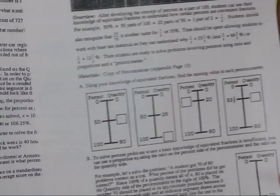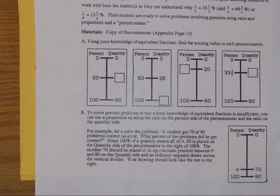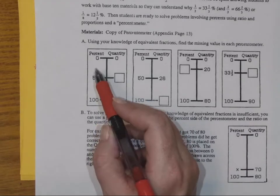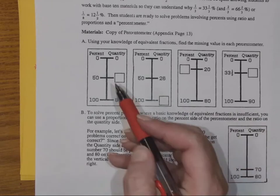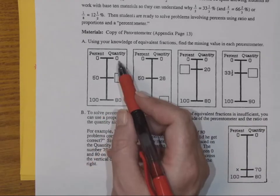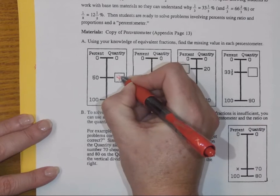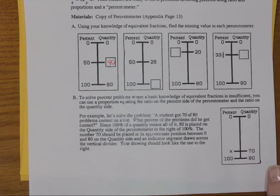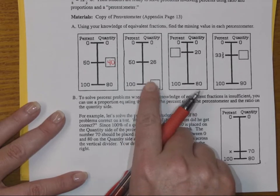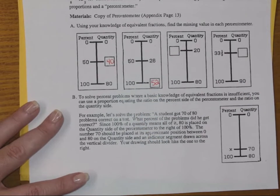Looking at some examples of percentometers on the worksheet. Notice we have the information filled in and a box for what we don't know. I have zero, fifty, one hundred percent on the left, and zero and eighty on the right. So what would the fifty percent be? For this next one, we don't know the full quantity, but we know that fifty percent of that quantity is twenty-six. If we double that, we should have fifty-two.